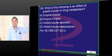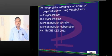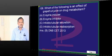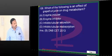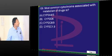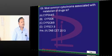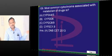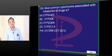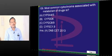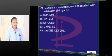Grapefruit juice is a powerful microsomal enzyme inhibitor — any drug given with it will have its level rise. The most common cytochrome associated with metabolism of drugs is CYP3A4-3A5, also called the Microsomal Mixed Function Oxidase System.